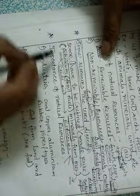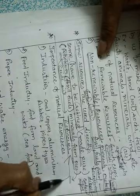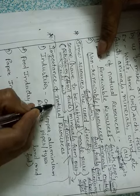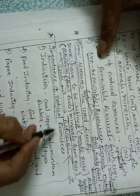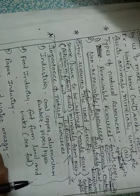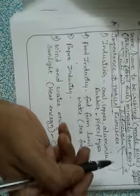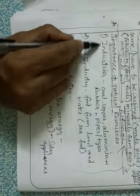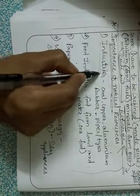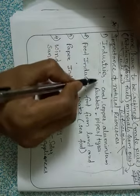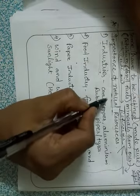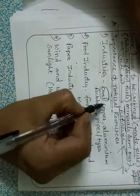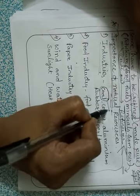Now, why are natural resources so important for us? The most important aspect is that they are used in many industries. Many industries run because of natural resources. For example, coal is a very important natural resource — coal is used in thermal power stations.